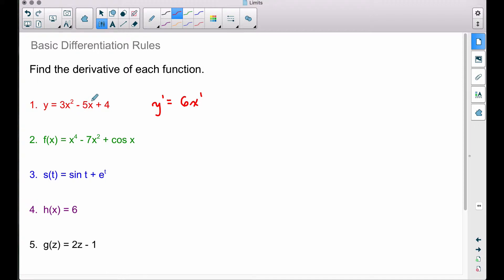Now move on to the next term. This is minus 5x to the first. Apply that same rule to this polynomial term here. Pull the 1 down, multiply it by negative 5, so we have minus 5x to the what power now? We subtract 1 from our exponent, so we get 0. And here is a rule about constants. The derivative of a constant, 4 is a constant because we don't have a variable, its derivative is going to be 0.